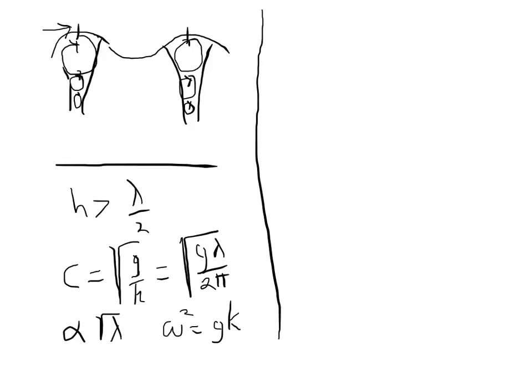In the opposite limit, we had a shallow water wave. In that case, the wavelength was long compared to the depth. The constraint or the criteria that we used was that h was less than 5% of lambda, so we'll say lambda over 20. In that case, we have what's known as a shallow water wave.